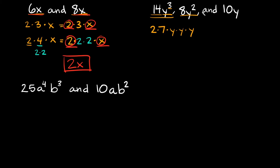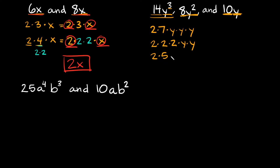Moving on to 8y². Two numbers we can multiply to get 8 would be 2 times 4, but 4 breaks down again to 2 times 2 — so 8 becomes 2 times 2 times 2. Then y squared is y times y. Lastly, 10y: the number 10 breaks down into 2 times 5, and we just have a single y. So we've multiplied all three terms out.